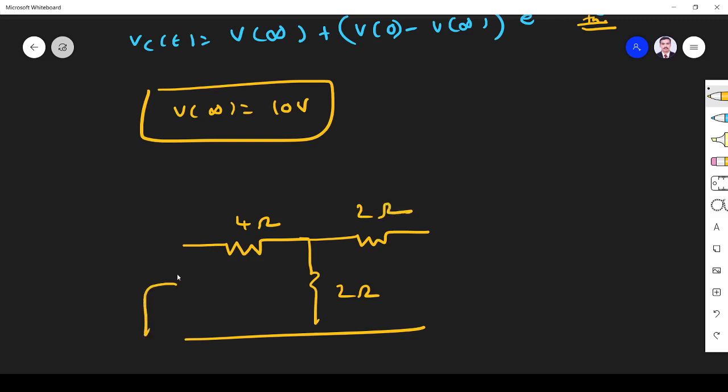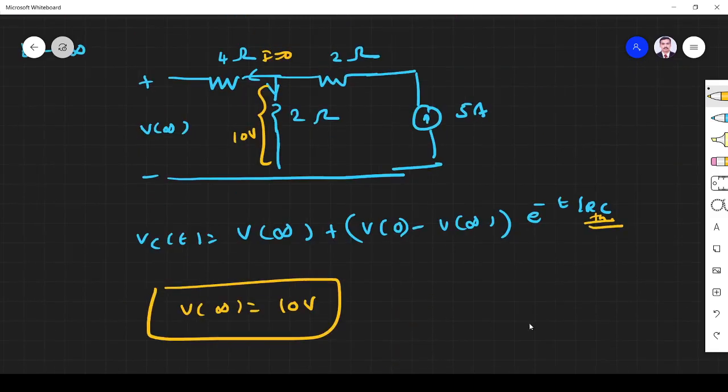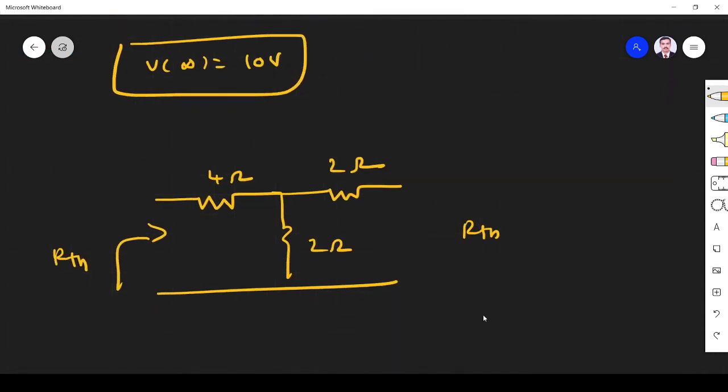Now I have to find R Thévenin on this side. R Thévenin is given by... We know when you find R Thévenin, we have to remove the source. Here I have a current source, so I remove it, it will become open circuit. Through this one I have to find R Thévenin, because across C only we have to find. So R Thévenin is this one.